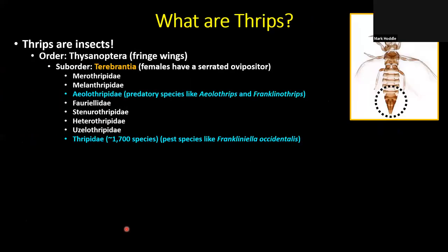So what are thrips? They are insects with six legs, a pair of wings, antennae, and a three-segmented body: head, thorax, and abdomen. They belong to the order Thysanoptera — the derivation of which is 'fringe wings.' You can see the fine cilia or setae coming off the backs of the four wings. There are several suborders within Thysanoptera. All females in the suborder Terebrantia have serrated ovipositors, which they use to pierce plant material such as a leaf or fruit, depositing eggs within the leaf. There are about eight families within the Terebrantia.